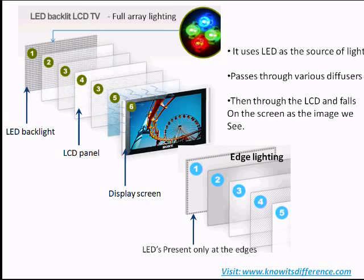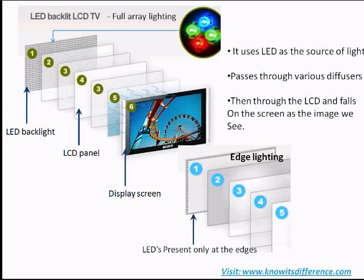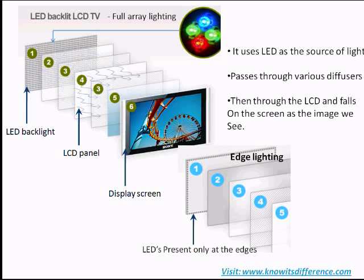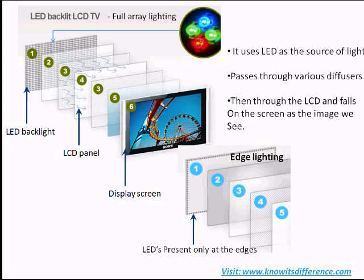With edge lighting, the series of diodes are arranged along the outside edges of the screen. When there is power, the light is distributed across the screen. Alternatively, in full-array lighting, there are several rows of diodes behind the entire surface of the screen. They provide more control over brightness and dimming, because the diodes can be turned on and off independently.